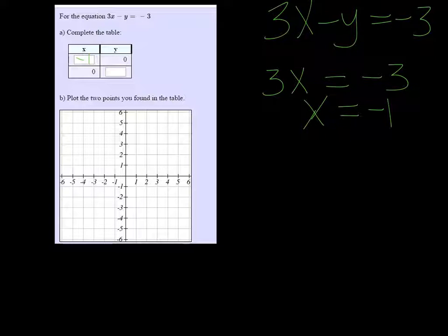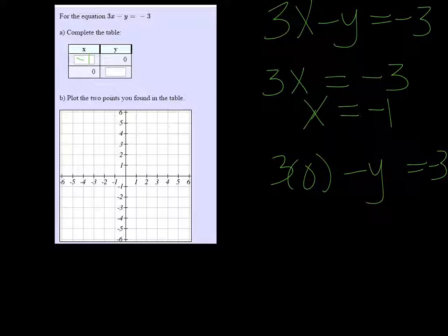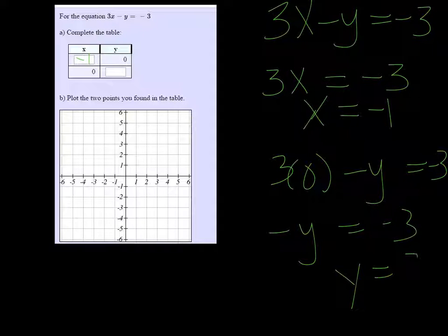And then if x is 0, we get 3 times 0 minus y is equal to negative 3. That's just negative y equal to negative 3, so y must be 3. So I'm going to put a 3 in that box there.